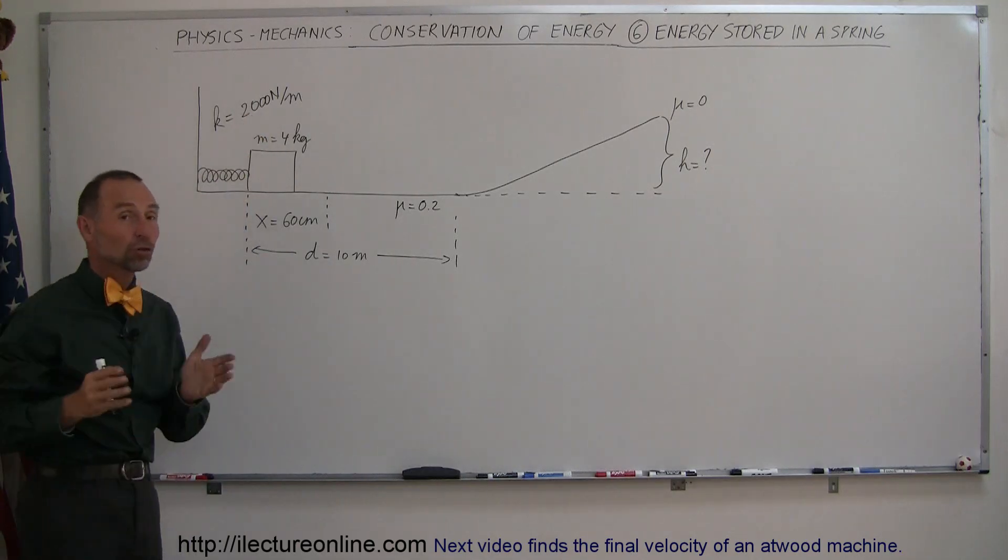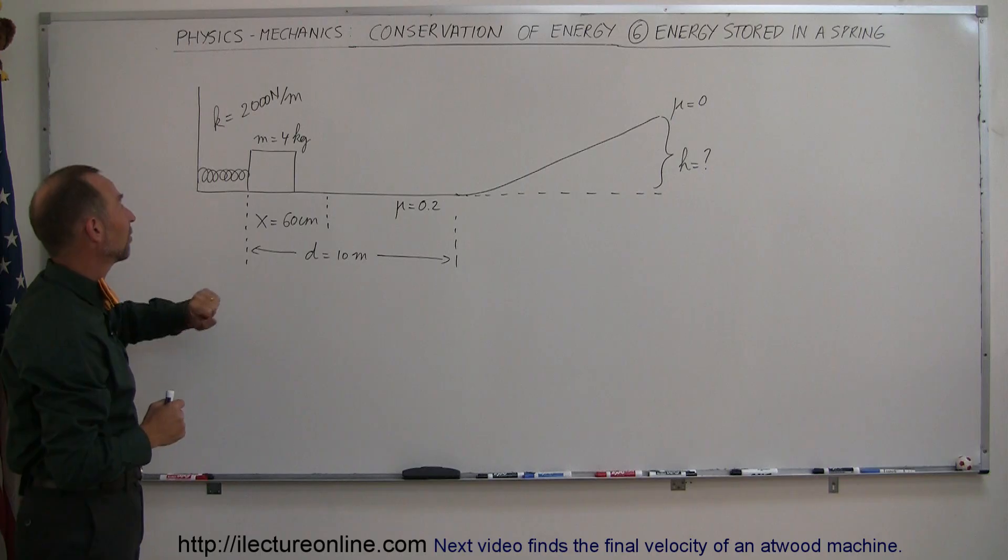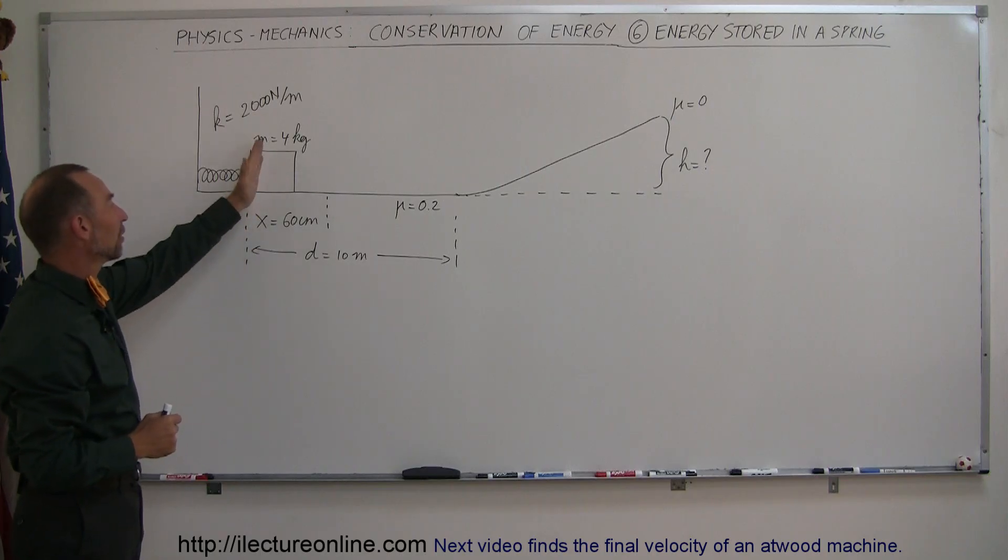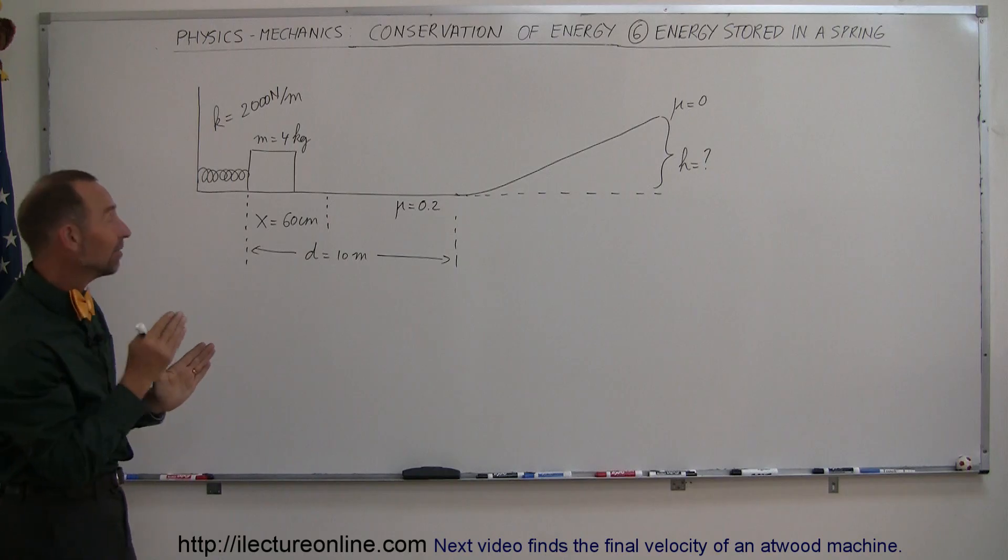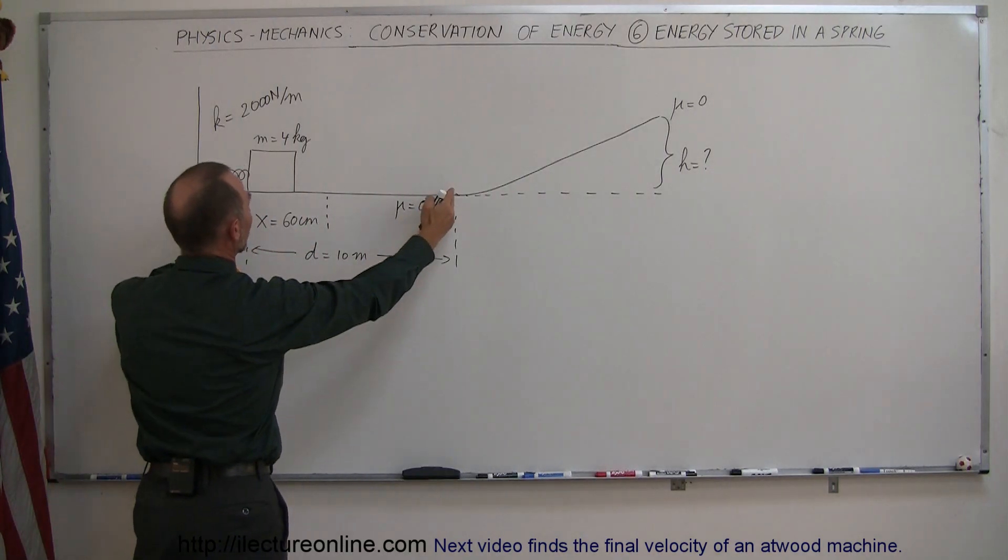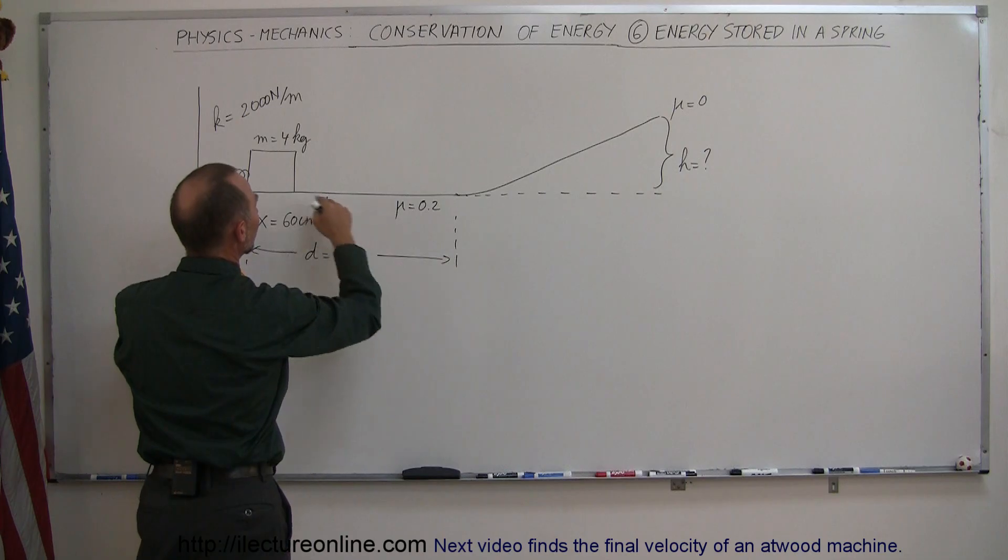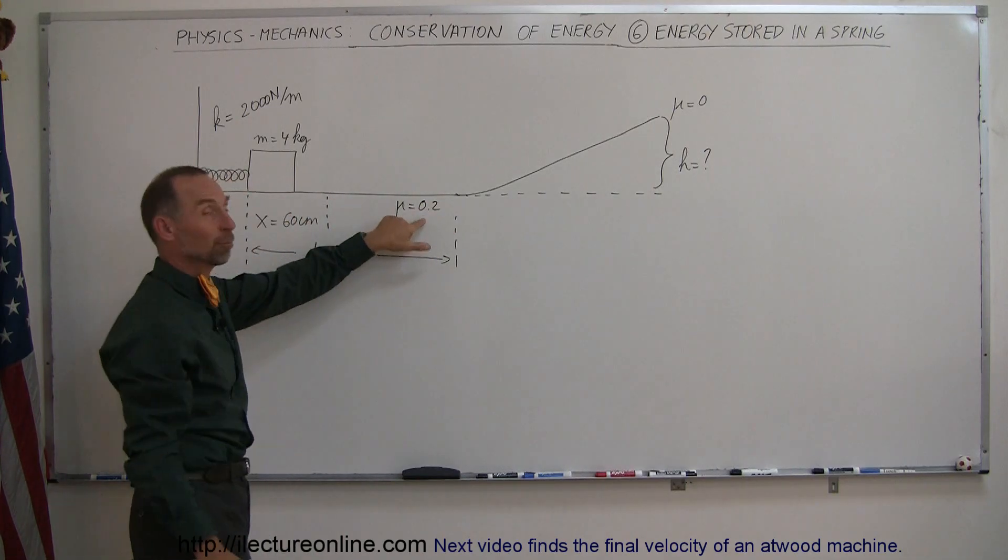in this case 2,000 newtons per meter, which is being compressed a distance of 60 centimeters. The object placed in front of it has a mass of 4 kilograms. The block is released. The block starts sliding forward. It has to overcome a distance of 10 meters along the horizontal path with a friction of 0.2.